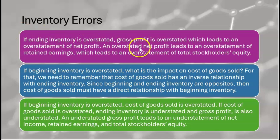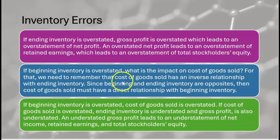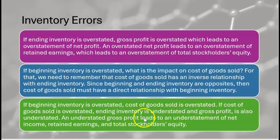If ending inventory is overstated, gross profit is overstated, which leads to an overstatement of net income, retained earnings, and total stockholders' equity. On the exam, what if beginning inventory is overstated? Cost of goods sold has an inverse relationship with ending inventory, but since beginning and ending inventory are opposites, cost of goods sold has a direct relationship with beginning inventory. So if beginning inventory is overstated, cost of goods sold is overstated, gross profit is understated, and net income, retained earnings, and stockholders' equity are all understated.